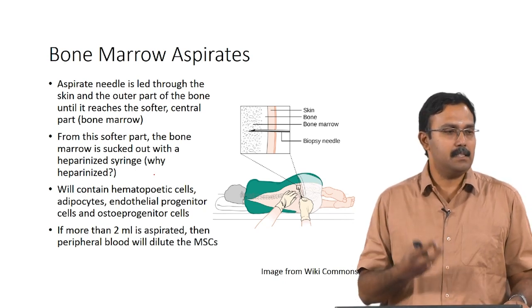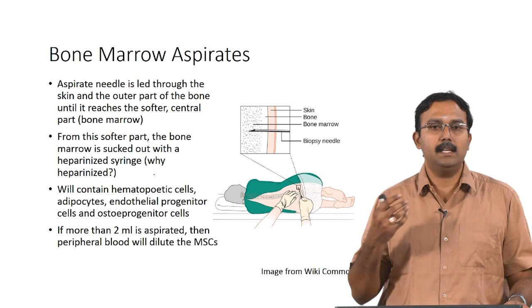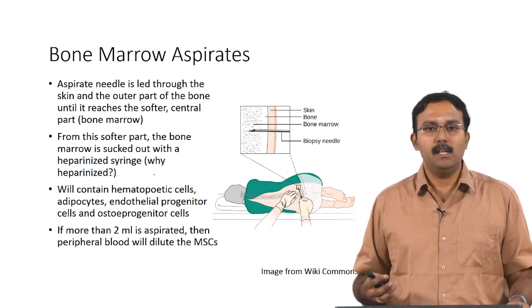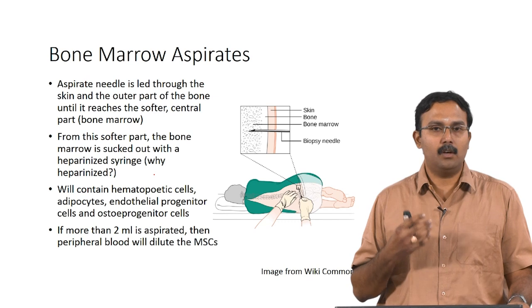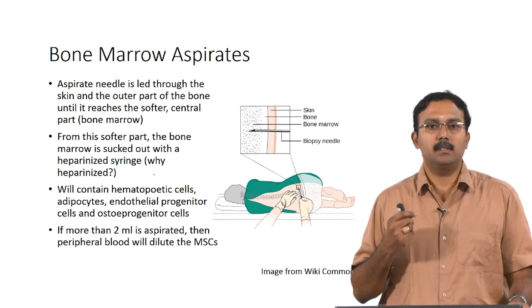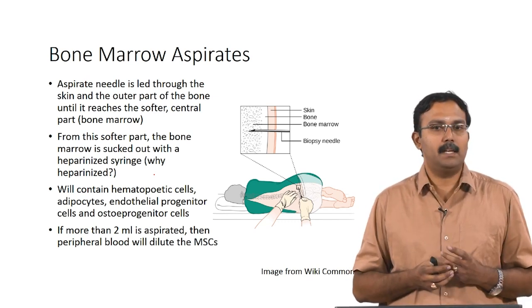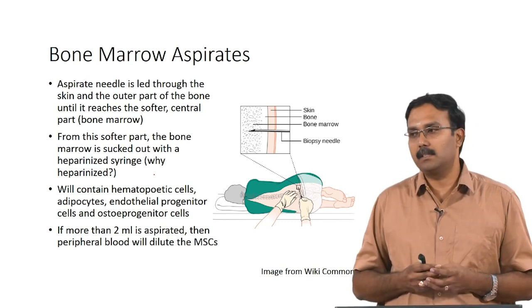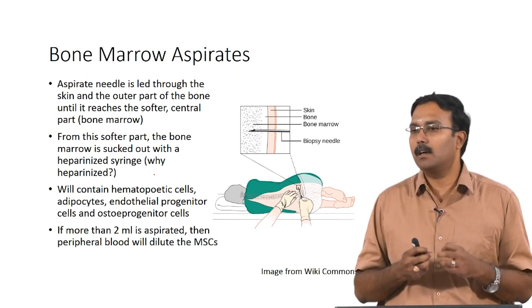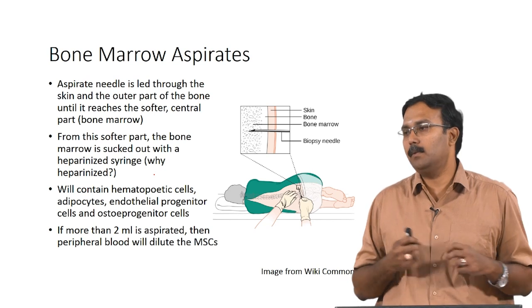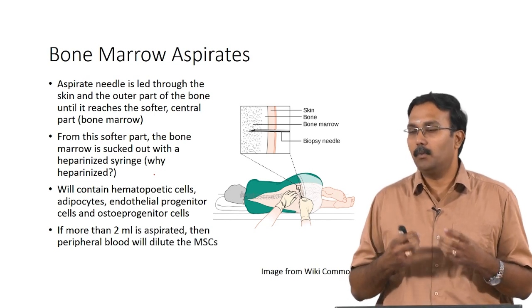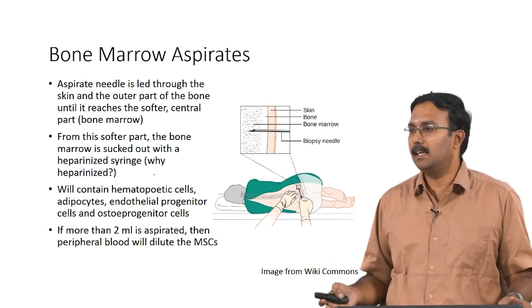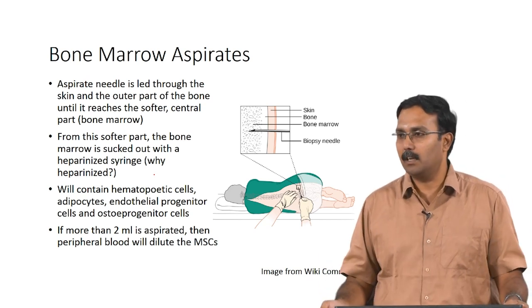These aspirates will contain hematopoietic cells, adipocytes, endothelial progenitor cells, and osteoprogenitor cells as well. If more than 2 ml is aspirated, peripheral blood can actually dilute the mesenchymal stem cells. So it is important to control how much you are aspirating, and whatever you get is a mixture of cells from which you may have to separate the specific cell you are looking for.